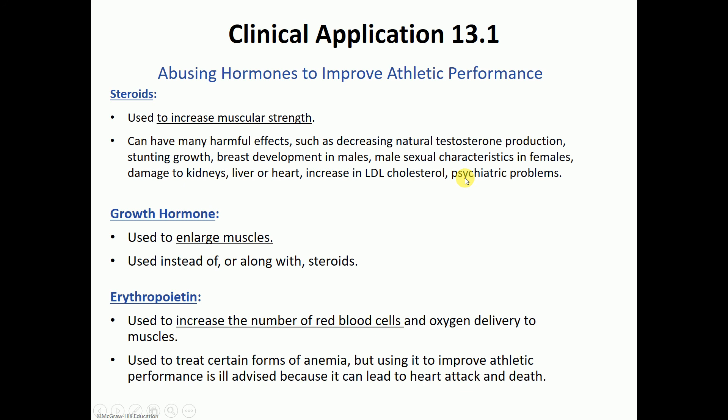Growth hormone is also used to increase athletic performance — to enlarge muscles and increase strength and endurance — sometimes with steroids or on its own, but it also has a list of side effects. Erythropoietin has no direct action on muscles, but it increases the number of red blood cells, increasing the oxygen-carrying capacity to muscles. Although used to treat certain kinds of anemia, it has been abused by athletes. Excessive use can increase blood viscosity, leading to blood clots, heart attacks, and death.